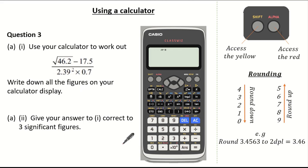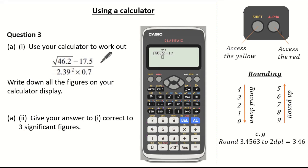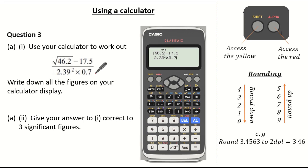Now remember to press the fraction button first so we can input our calculation on the top and the bottom of our fraction. Then we press the square root of 46.2. Don't forget to scroll to the right to come out of the square root, and you can see it looks exactly the same as the calculation on top. Over 2.39 and then squared, then scroll to the right to come out of the squared, and we multiply by our 0.7. You can see the calculation given in the exam looks exactly the same as the calculation on our calculator display, which gives us minus 2.676759314.